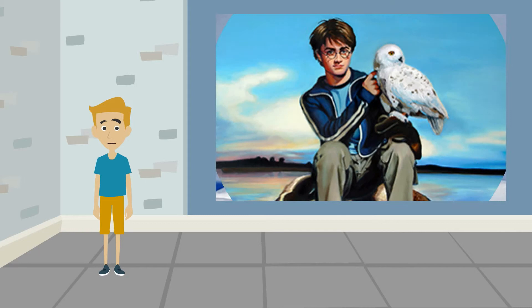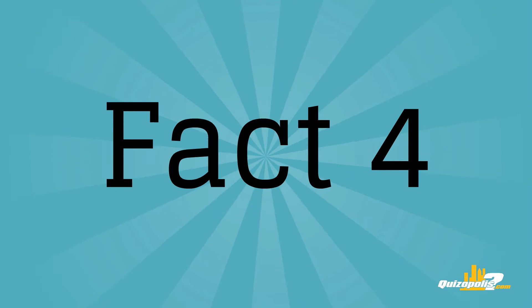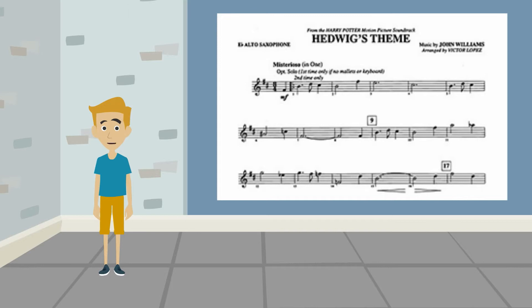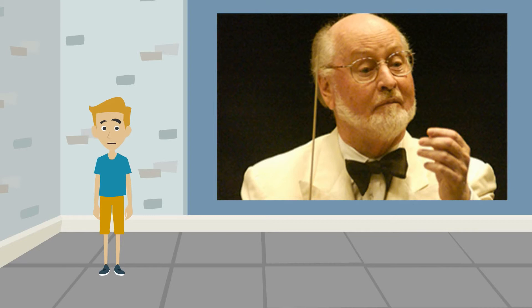Fact number 4. The main theme for Harry Potter that has become so recognizable is called Hedwig's theme. The score was created by John Williams, who has also created music for other iconic movies, including Star Wars and E.T.